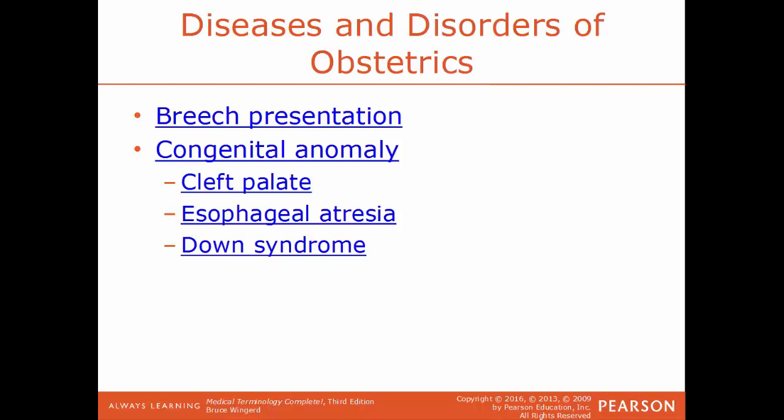Common examples of congenital anomalies: a cleft palate is where the roof of the mouth doesn't fuse all the way together. Esophageal atresia is where the esophagus, instead of connecting to the stomach, ends up being a closed tube. Down syndrome is a congenital genetic defect where there's an extra chromosome in every cell — instead of the normal 46 chromosomes, people with Down syndrome have 47.